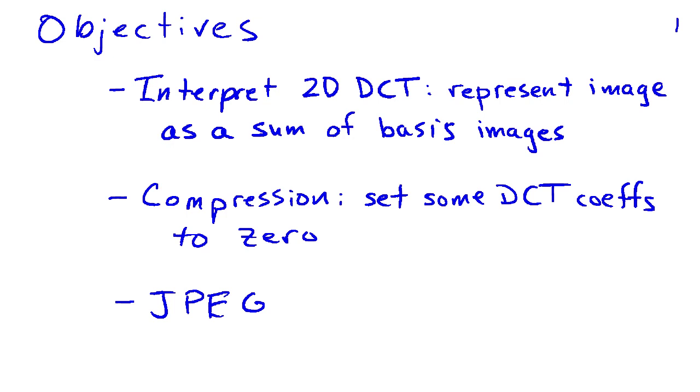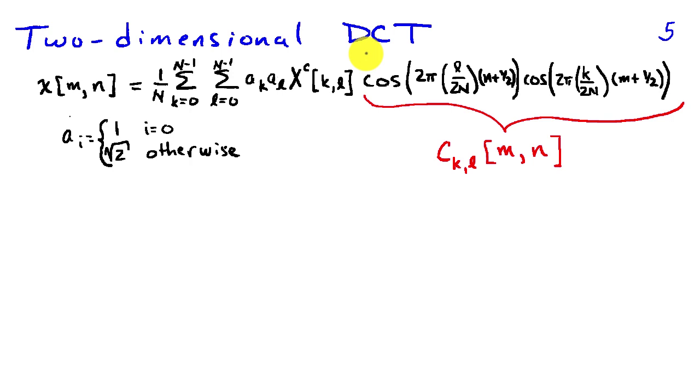We can achieve compression by setting some of the discrete cosine transform coefficients to zero, and JPEG uses a variation on this idea.